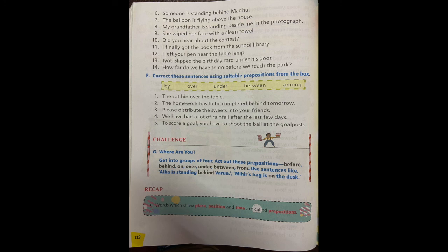We have had a lot of rainfall after the last few days. After the last few days? No, over the last few days. To score a goal, you have to shoot the ball at the goal post. No, where do we shoot the ball to make a goal? It is between. Write down between. At is wrong, between is correct.